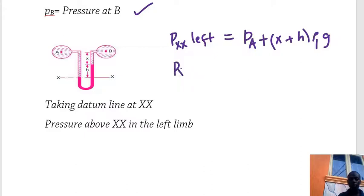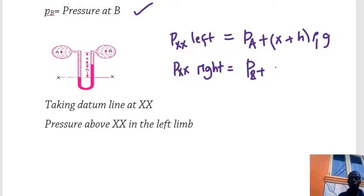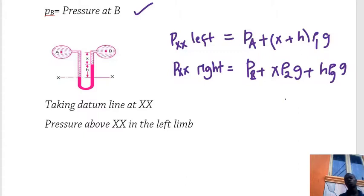Likewise, the pressure above X-X in the right limb equals pressure at B plus the pressure due to the column of height x of the fluid in B and height h due to the manometric fluid. So this will be P_B plus x times ρ₂ times g, plus h times ρ_g times g, where ρ_g is the density of the manometric fluid. This gives us equation one (left limb) and equation two (right limb).